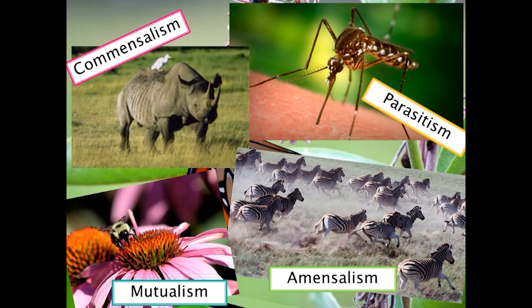These pictures illustrate some symbiotic relationships. The mosquito is an example of a parasite drawing blood from its host — the host is harmed and may also suffer the effects of diseases carried by the mosquito. The herding zebra demonstrate amensalism — they are trampling the grass, but there is no harm or effect on them. The bee and the flower represent a mutualistic relationship that allows both to benefit. The bird on the rhino demonstrates a commensalistic relationship where the bird is benefiting, but there is no effect on the rhino.